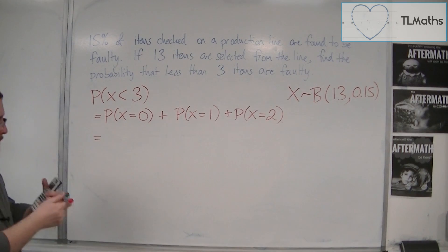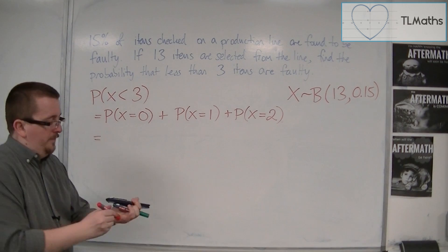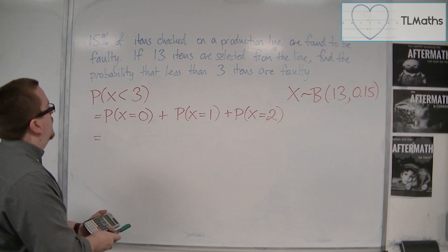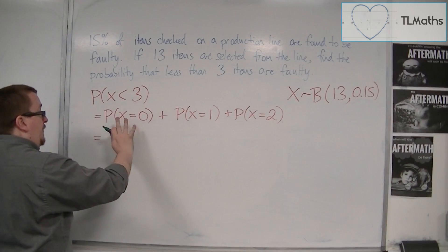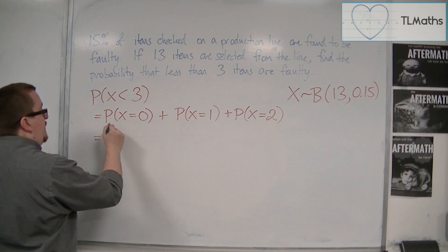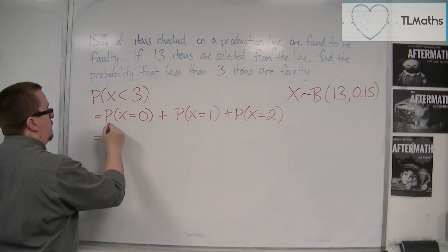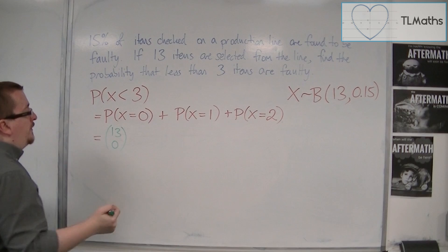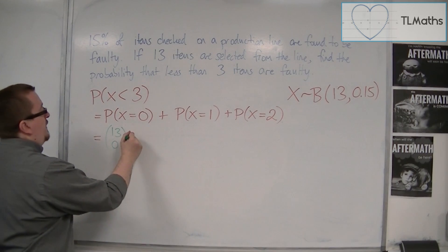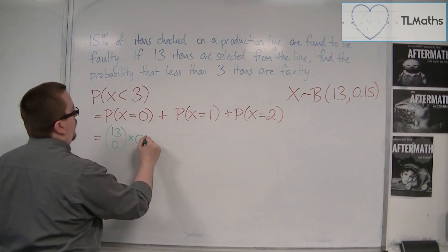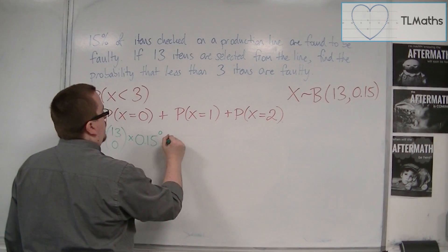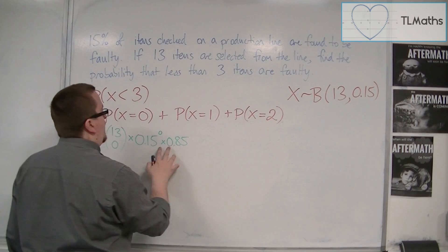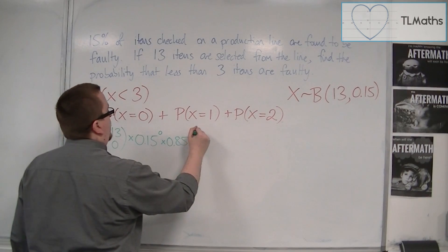So I could use the formula for each of these. For 0, we would have 13 choose 0, so 13 NCR 0 times probability of success, so 0.15 to the power of 0 times 0.85, so 1 minus P, to the power of 13.